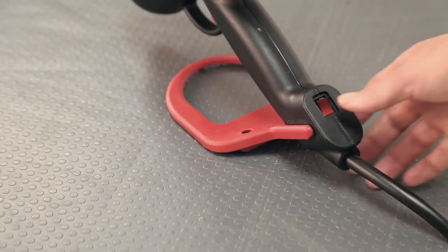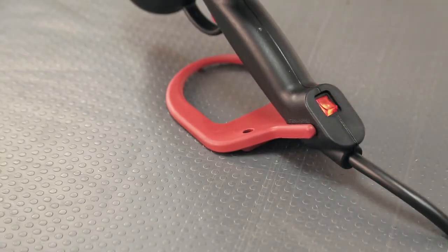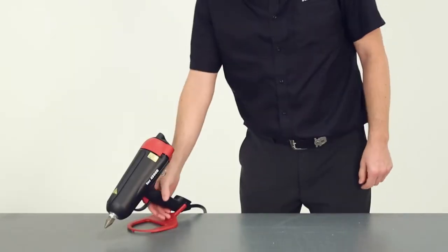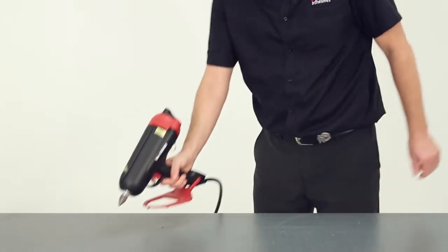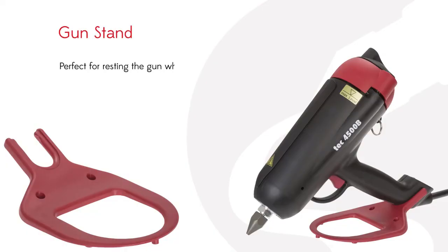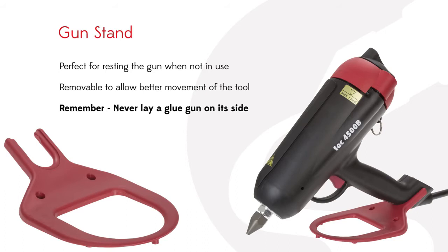Then, simply switch your gun on and wait for it to reach operating temperature. Lightweight for easy one-handed operation, the TEC 4500 comes with a detachable stand for increased freedom of movement when the gun is in use, and provides a sturdy base for when it's not.